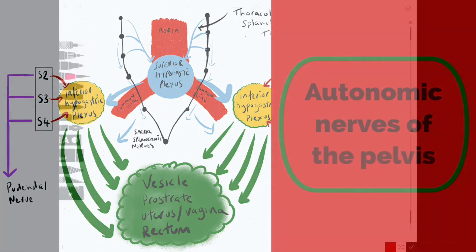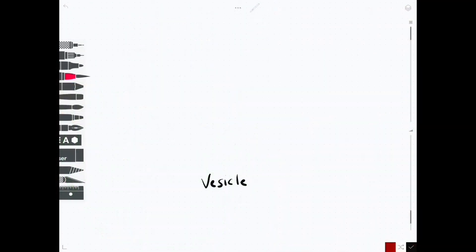Hello and welcome to this video covering the autonomic nerves of the pelvis. We are going to take a detailed look at how the sympathetic nerves and the parasympathetic nerves innervate structures inside the pelvic cavity via a schematic diagram.